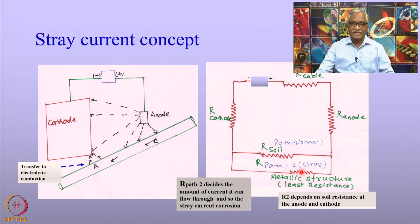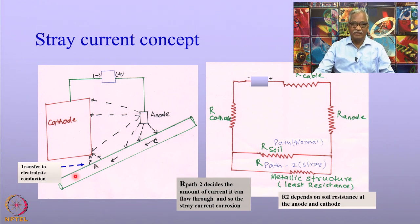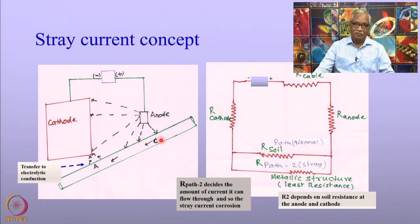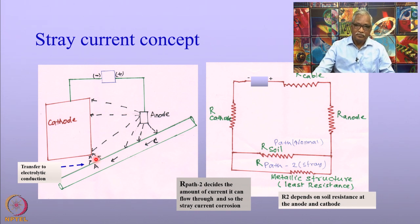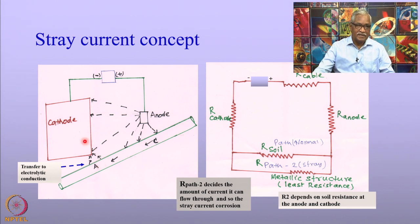To summarize: stray current corrosion occurs whenever a foreign pipeline or foreign structure lies in the vicinity of an already cathodically protected structure. A part of the current from the anode enters the foreign structure — the entry point becomes a cathode, and where the current leaves back to the circuit that becomes an anode. The location where it becomes an anode suffers severe corrosion. The extent of corrosion depends on the resistance offered by the soil between the anode, the foreign pipeline, and the buried structures.